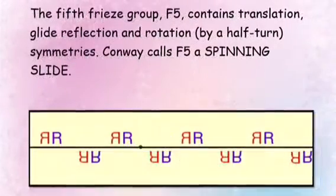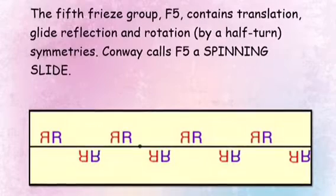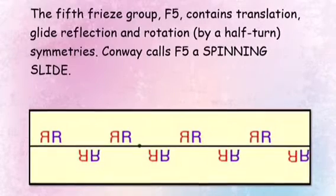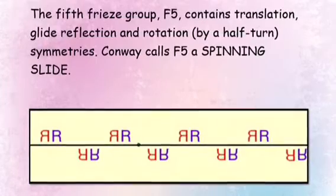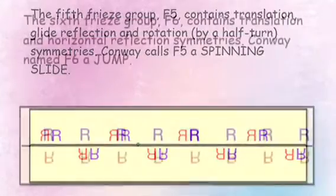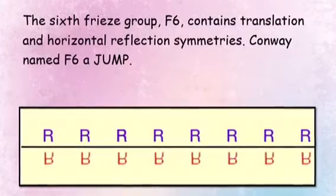The fifth freeze group, F5, contains translation, glide reflection, and rotation by a half turn symmetries. Conway calls F5 a spinning slide.